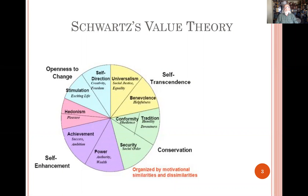Schwartz's value theory basically states that there are ten broad values that guide our individual behavior. And this model, as you see, can tell us which values are complementary and in alignment and which values are in opposition.